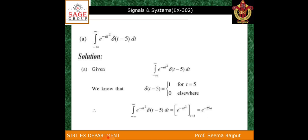The first example is the integration from minus infinity to infinity of e to the power minus 8t squared times δ(t−5) dt. We know the property of the impulse function: δ(t) equals 1 for t equal to 0, and 0 for t not equal to 0. For this case, δ(t−5) equals 1 for t equal to 5, and 0 elsewhere.